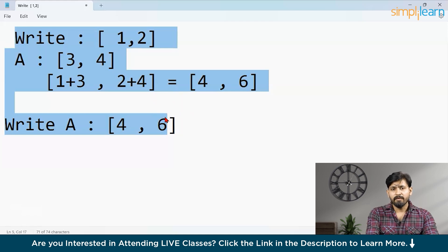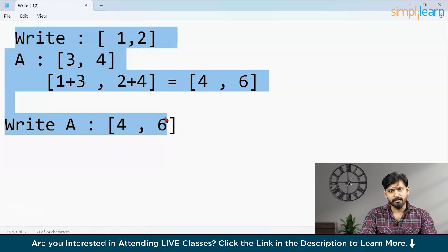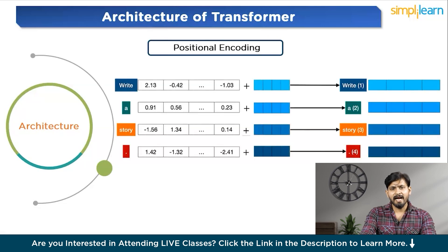But here's the tricky part. If we added the vectors in different order, we'll also get the same result. So, the sentences with the same word in different order will end up with the same vector representation. To fix this, we use something called positional encoding. This involves adding a set of predefined vectors to the word vectors. These extra vectors carry information about the position of each word in the sentence.